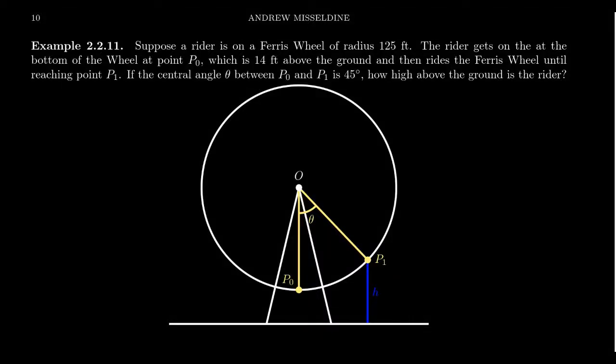Let's go to the carnival on this right triangle application. Suppose that a rider is on a Ferris wheel and the radius of that Ferris wheel is 125 feet. So it's a pretty big Ferris wheel here.